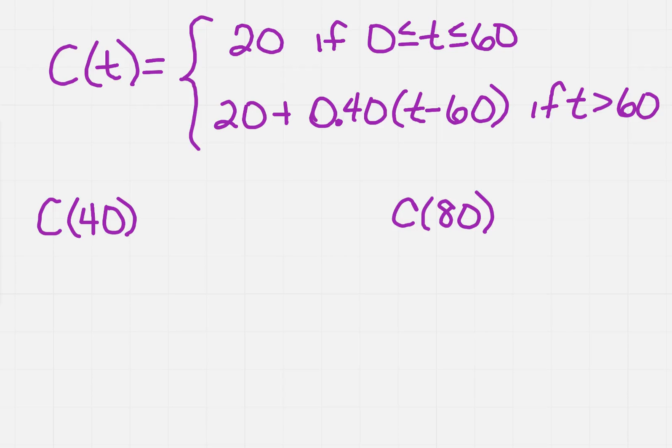If I'm given something like what you see at the top of this page, where I have two conditions for C of t, this is what we call a piecewise function. It means that there are different things that are true for different conditions. The function is going to be 20 automatically if any of the values are between 0 and 60, including them.